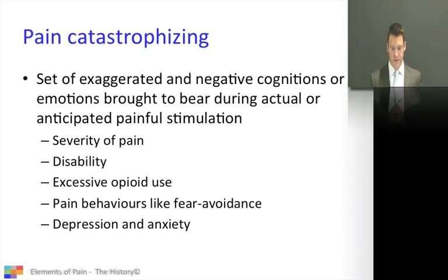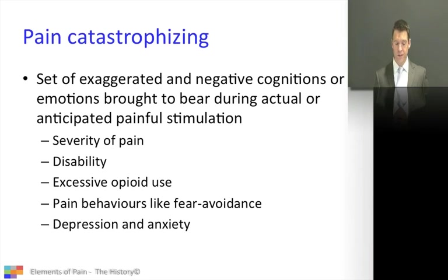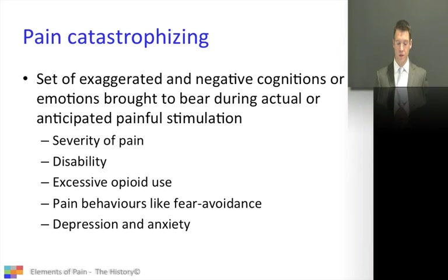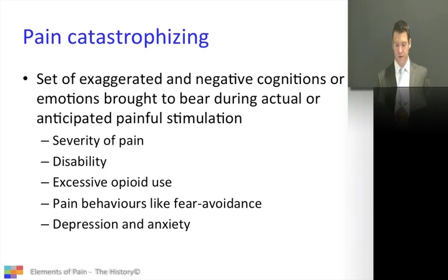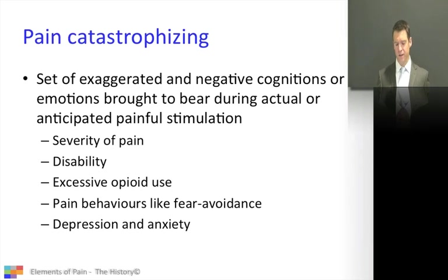Pain catastrophizing is very topical with a lot of articles out there — a perfect exam question. The definition is a set of exaggerated negative cognitions or emotions brought to bear during an actual or anticipated painful situation, meaning they have histrionic type thinking around their pain. Catastrophizing has been repeatedly and consistently linked with severity of pain, disability, excess opioid use, fear and avoidance pain behaviors, and goes hand in hand with depression and anxiety.